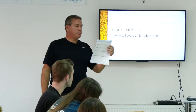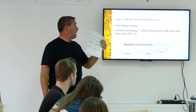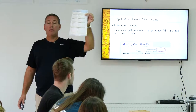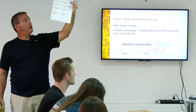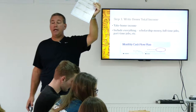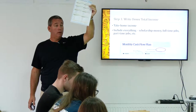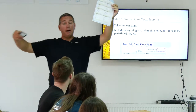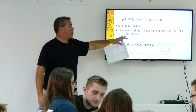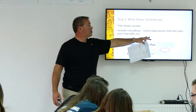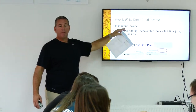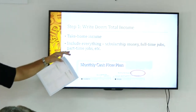A zero-based budget starts off with an income assumption at the very top left-hand corner of the page. There's one little box that says monthly take-home pay. I want everybody to write in an expected amount of money that you're going to have in the next 30 days — including everything: scholarship money, full-time jobs, part-time jobs. Everything goes in there.